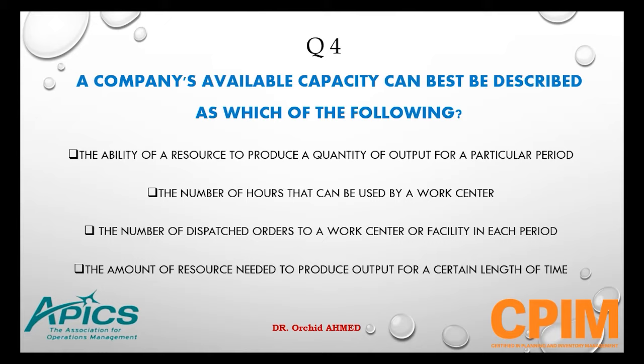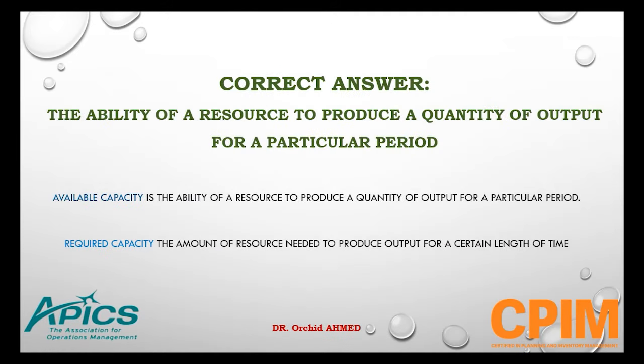Here we talk about the company's available capacity, not required capacity. The right answer is: the ability of a resource to produce a quantity of output for a particular period — this is the definition of available capacity. The required capacity, by contrast, is the amount of resource needed to produce output for a certain length of time.